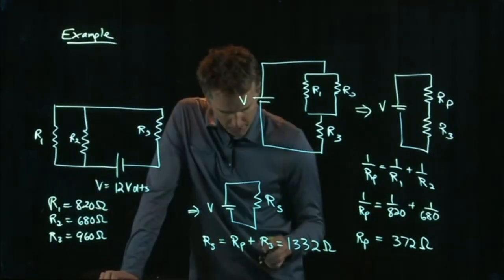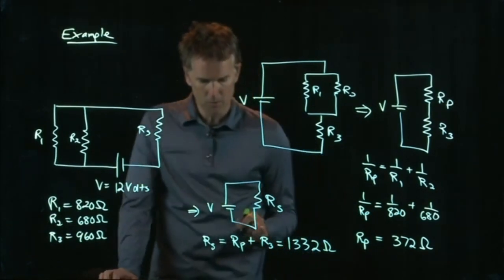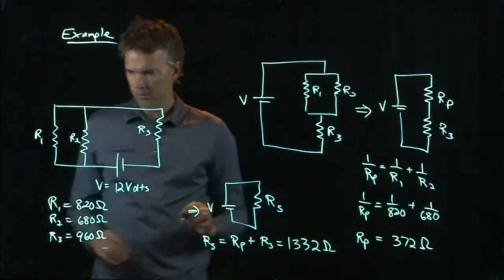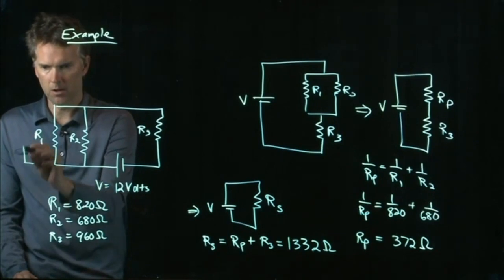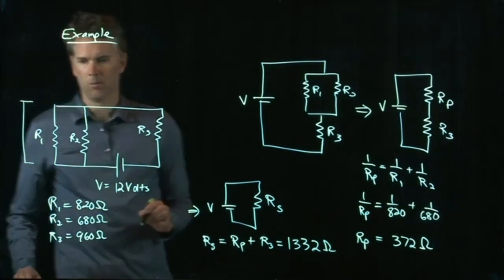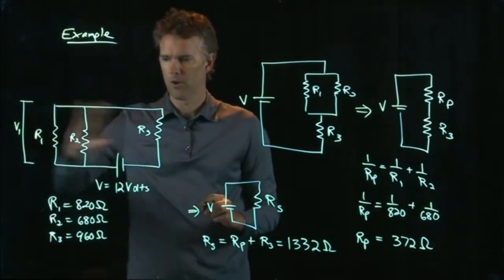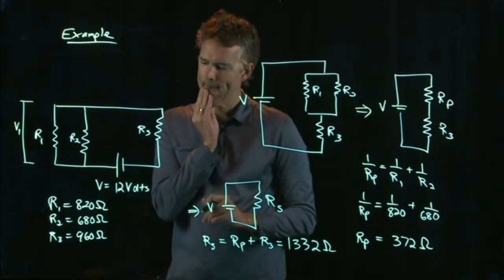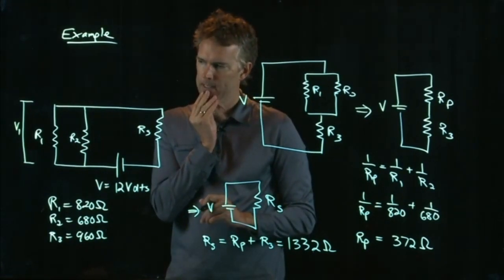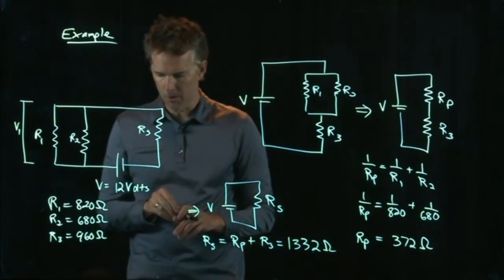The second part says, determine the voltage across the 820 ohm resistor. So, they want the voltage across here. We'll call that V1. What is the voltage across resistor number one? Aha! How do we do that? I think to do that, we're going to need a little bit more information.